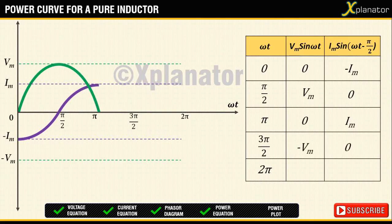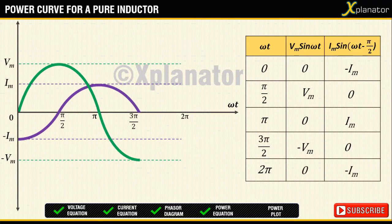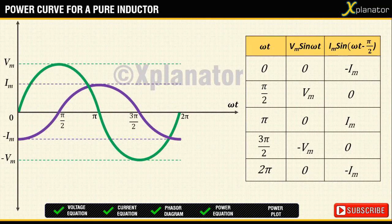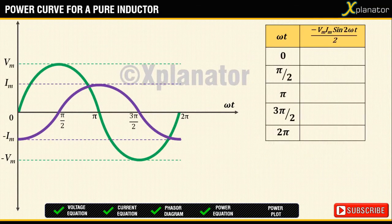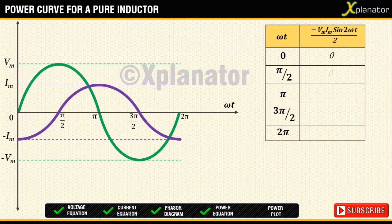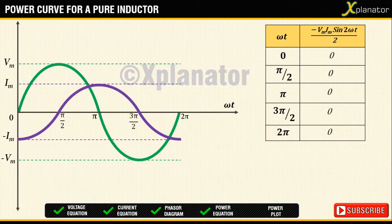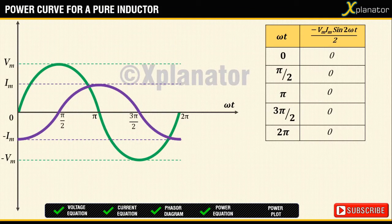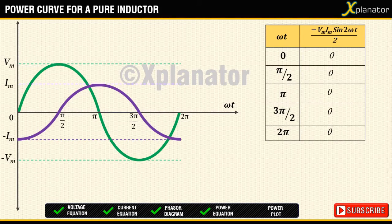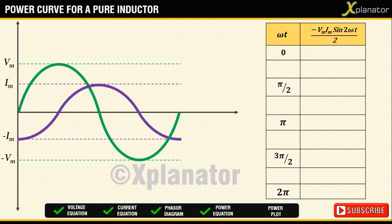To plot the power curve, calculate different values of power for different values of ωt. You will observe that for the values which have been considered previously, the answer turns out to be 0. So we need to consider more points as it is not possible to draw the plot with a given set of points.